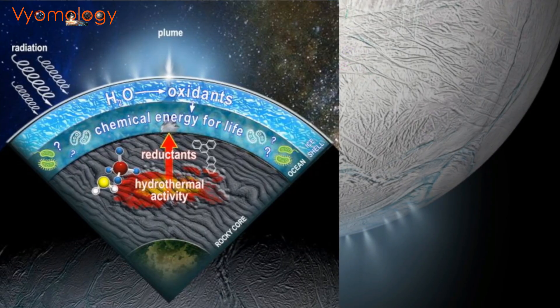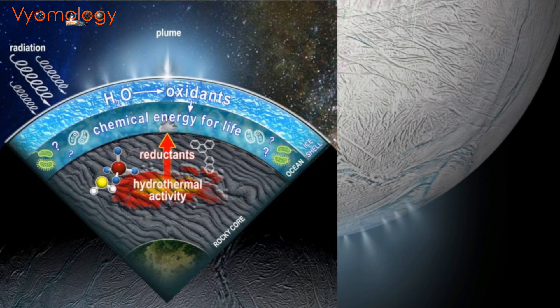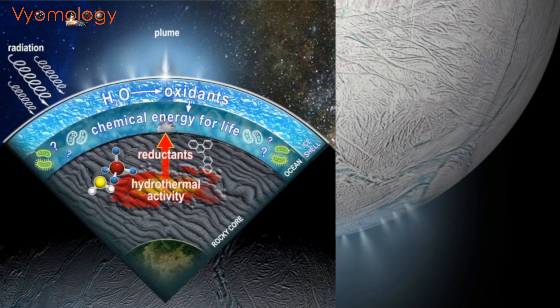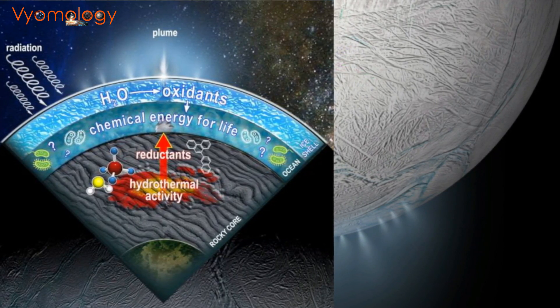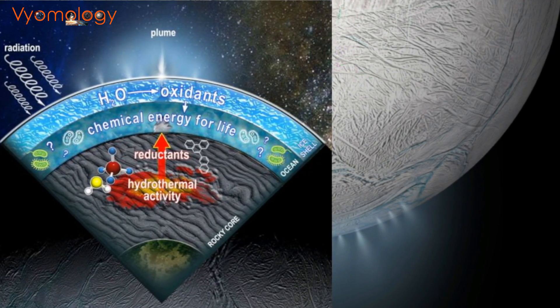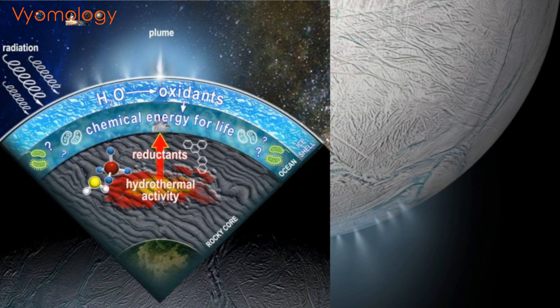The Redfield ratio, a fundamental principle in ecological theory, becomes crucial. It indicates a harmony between ocean water and plankton nutrients, a balance essential for life. The study introduces ammonia and inorganic phosphorus in Enceladus' ocean, aligning with the Redfield ratio, hinting at the moon's potential for life.